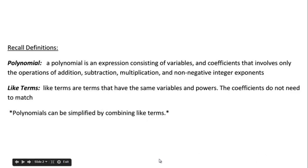Some definitions: A polynomial is an expression consisting of variables and coefficients, involving only operations of addition, subtraction, multiplication. You can't have any negative integer exponents. Like terms are terms that have the same variables and powers; the coefficients don't need to match. We can simplify polynomials by combining like terms.